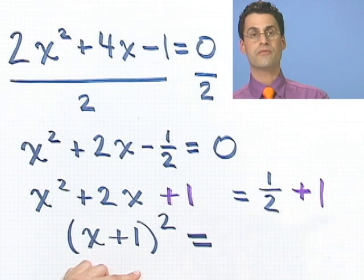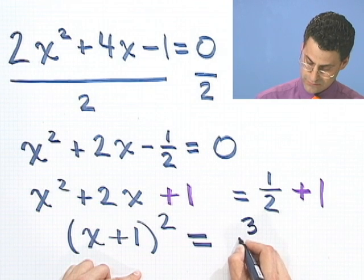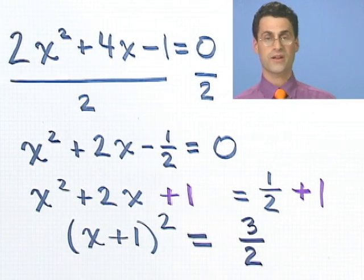What do we have on this side? Here we have 1 and a half. And what's 1 and a half? 1 and a half is just 3 halves. So that's where we are right now.